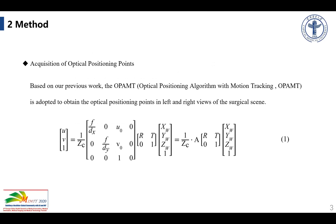The algorithm is mainly composed of two aspects. First is acquisition of optical positioning points. Based on our previous work, the OPMT is adopted to obtain the optical positioning points in left and right views of the surgical scene. The OPMT, based on an optical tracking system, is established by our research group. After instrument rotation calibration, we use the optical positioning instrument to continuously collect points in high attention areas of the surgical field. The three-dimensional world coordinates of the forceps tip points are obtained, and by applying equation one, the pixel coordinates of those tip points on the left and right views can be obtained.